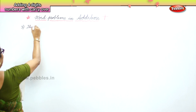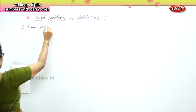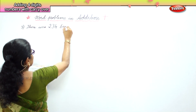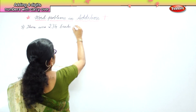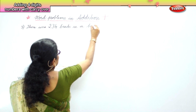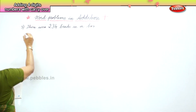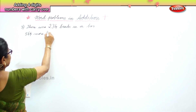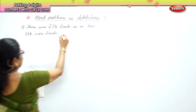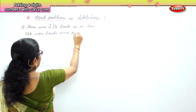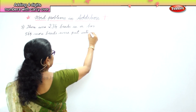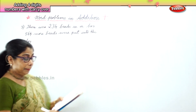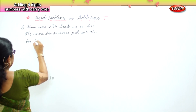Problem three: there were two hundred and thirty four beads in a box. Five hundred and sixty four more beads were put into the box. The question is: how many beads are there in the box in all?